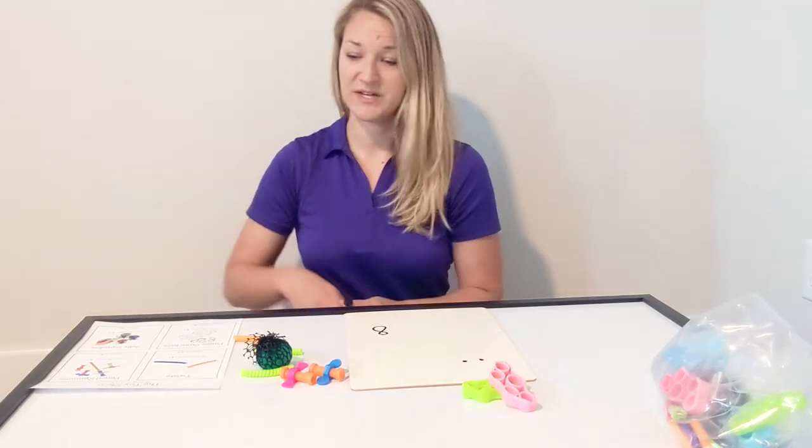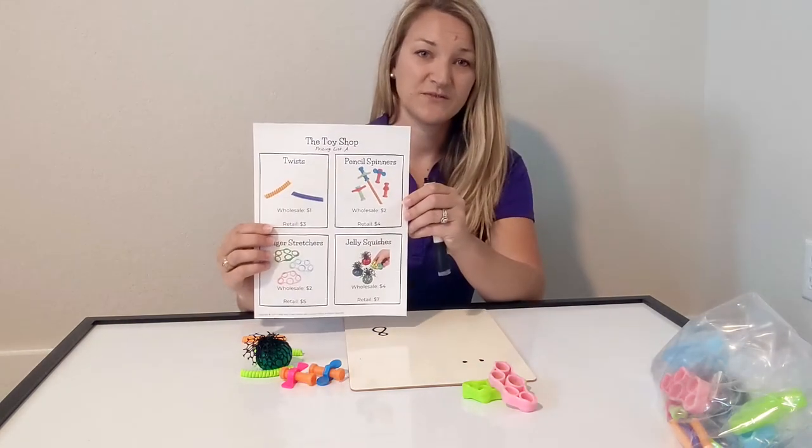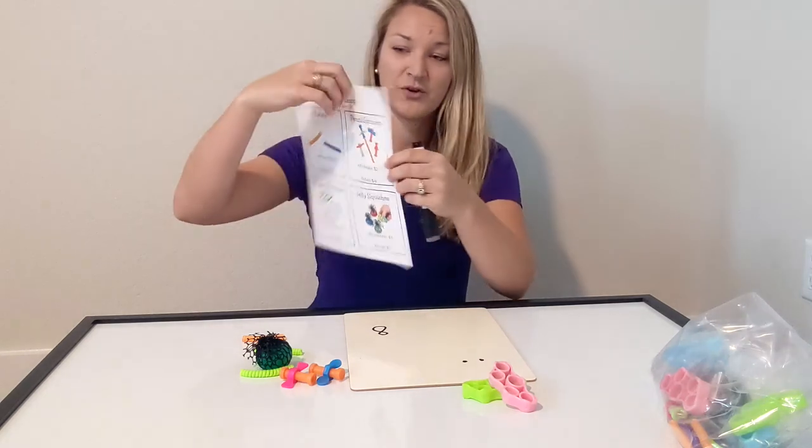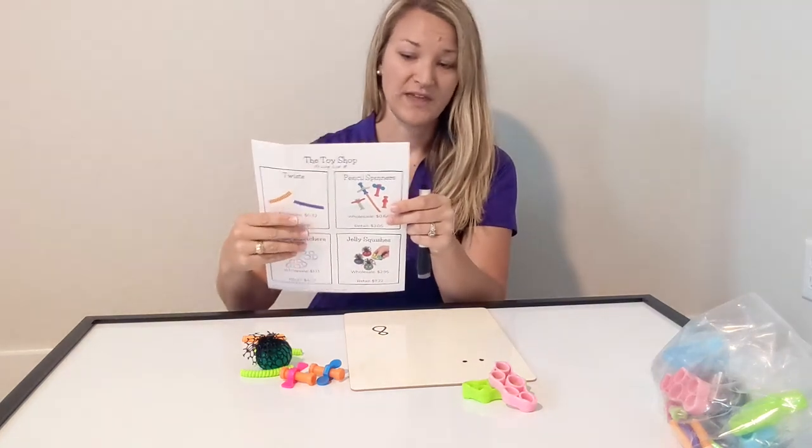For the older students, you're going to pass out a pricing list for the different toys. There is pricing list A for second and third grade and pricing list B for fourth and fifth grade. They have different values on them.